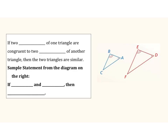To begin with, let's go ahead and define our angle-angle theorem. So if we have two angles of one triangle that are congruent to two angles of another triangle, then the two triangles are in fact similar.